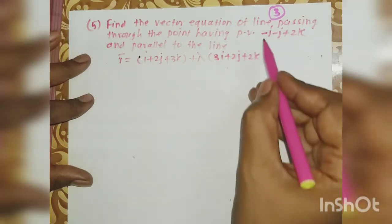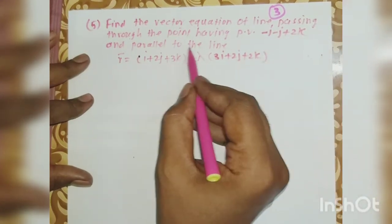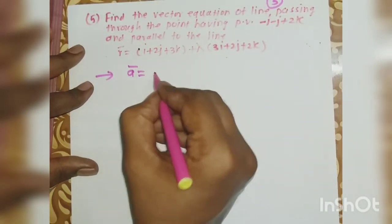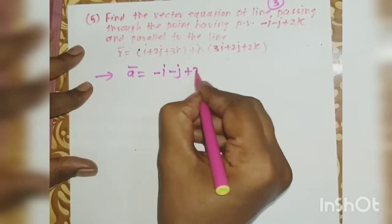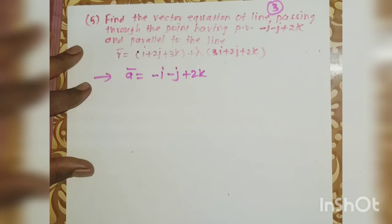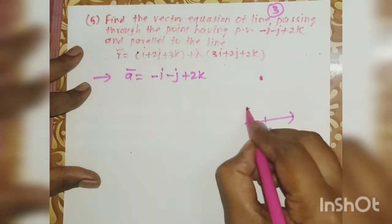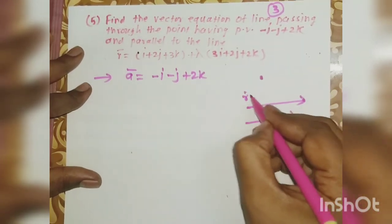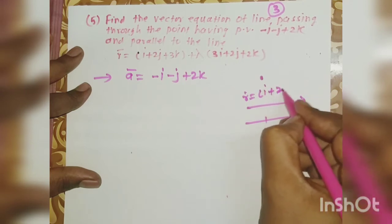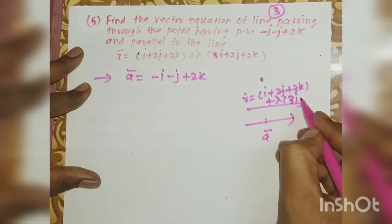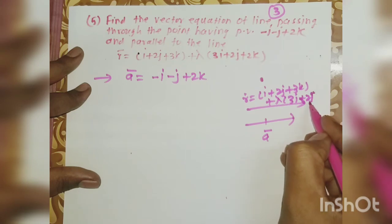The next example: find the vector equation of a line passing through the point whose position vector is −i − j + 2k and parallel to the given line. The given line is r̄ = (i + 2j + 3k) + λ(3i + 2j + 2k).